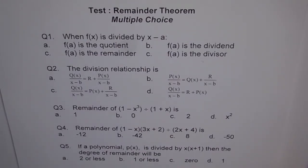Well here is the first set on multiple choice questions. Question 1. When f(x) is divided by x minus a, then f(a) is a quotient, f(a) is the remainder, or f(a) is dividend, or f(a) is the divisor. Make a choice.